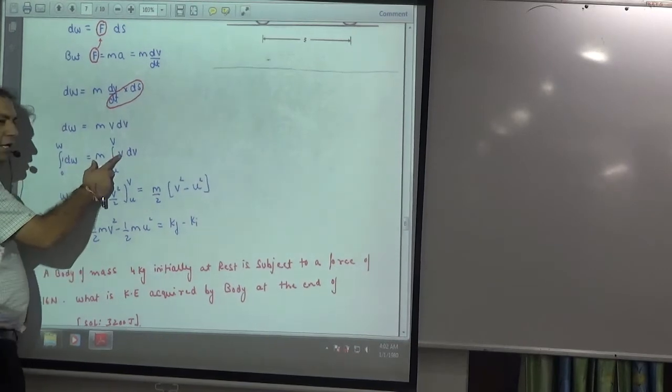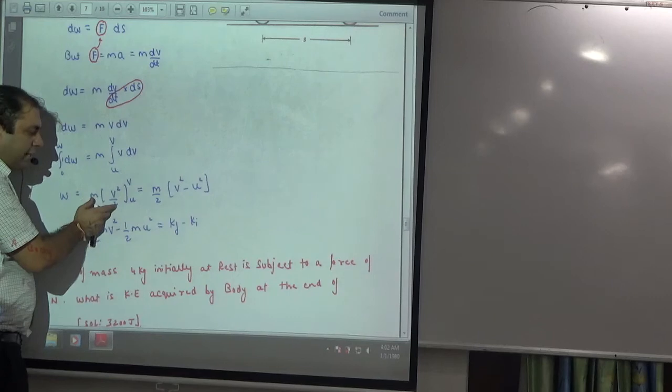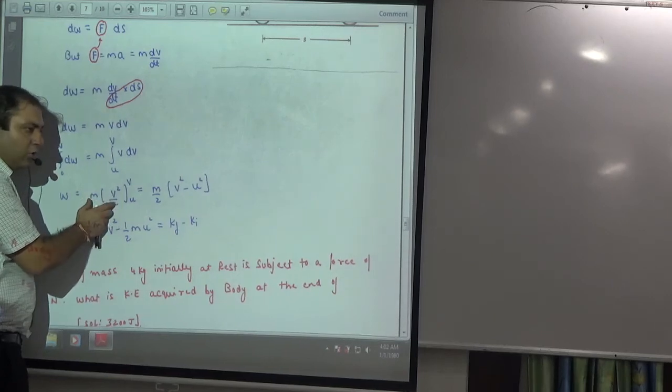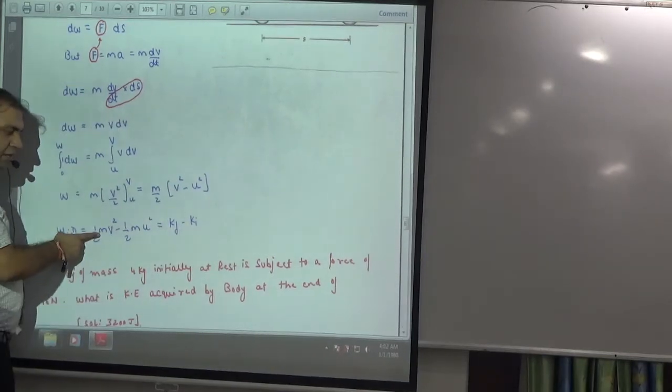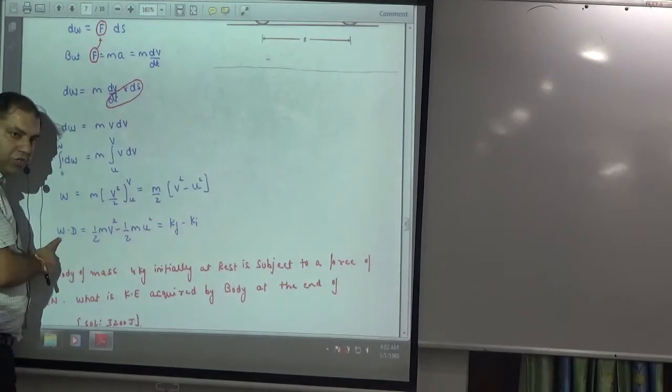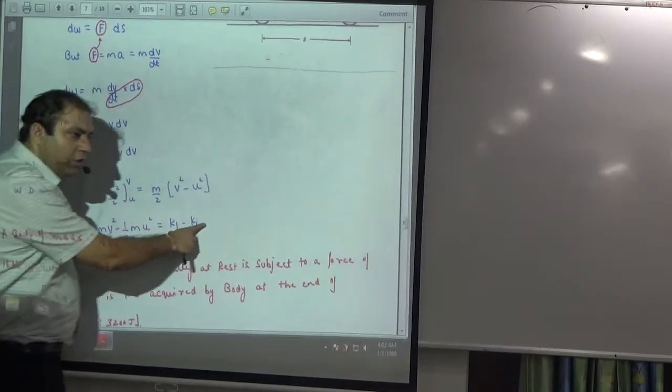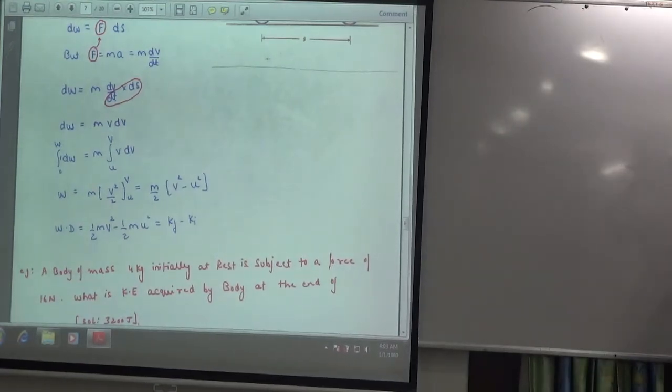Same, this is w. V integration is v² by 2. In place of v, upper limit v², lower limit u² by 2. ½ mv² minus u². ½ mv² minus u². ½ mv² means final kinetic energy. ½ mu² means initial kinetic energy. You have to move this to get your answer.